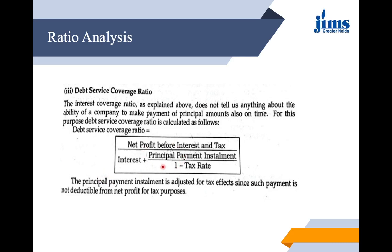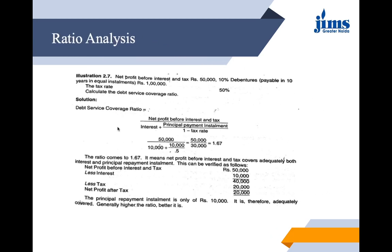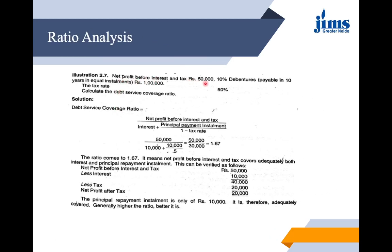The principal payment installment is adjusted for tax effects since such payment is not deductible for tax purposes. In the numerical example, the net profit before interest and tax is given as ₹50,000, 10% debentures payable in 10 years in equal installments amounting to ₹1 lakh, and the tax rate is 50%. We use the DSCR formula and put in the values: PBIT is ₹50,000.